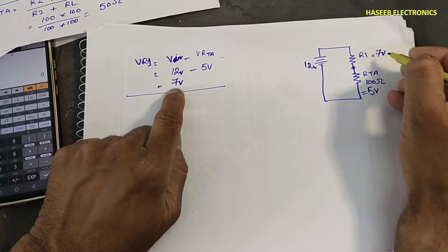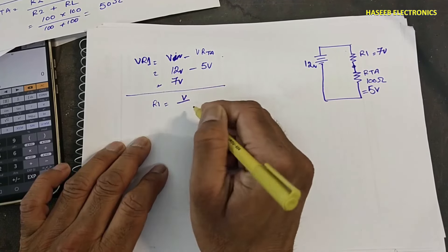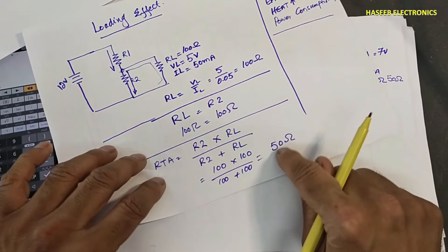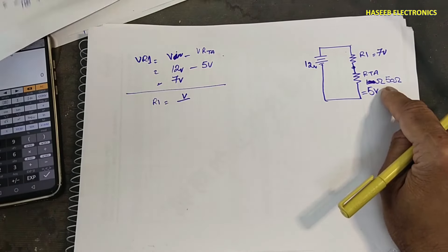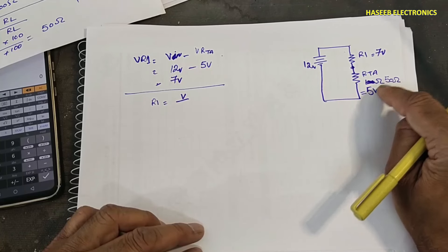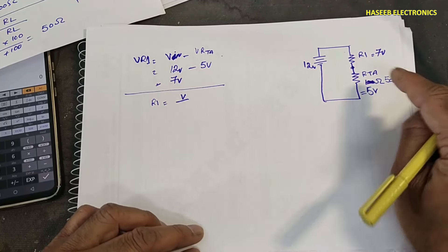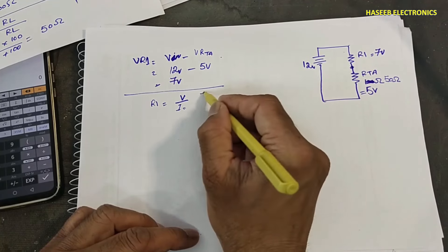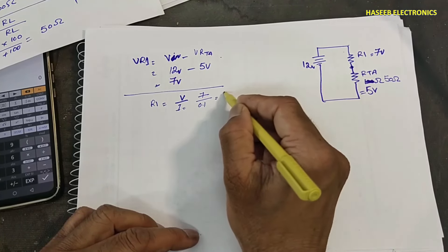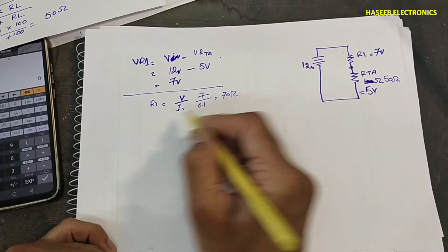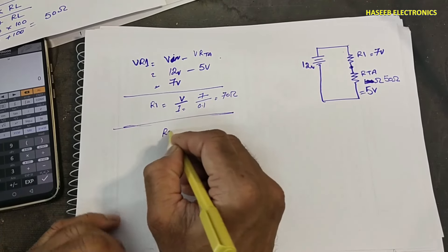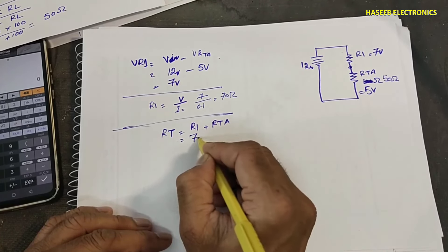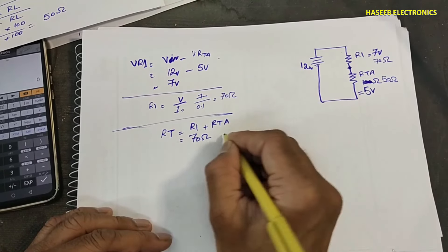RTA is 50 ohms as calculated. V_in is 12 volts, 5 volts dropped across RTA, and current through the node is 5 divided by 50 equals 100 milliampere. The same 100 milliampere flows through R1. So we need R1 to drop 7 volts at 100 milliampere: R1 equals 7 divided by 0.1 equals 70 ohms. Now checking RT: R1 plus RTA equals 70 plus 50 equals 120 ohms.